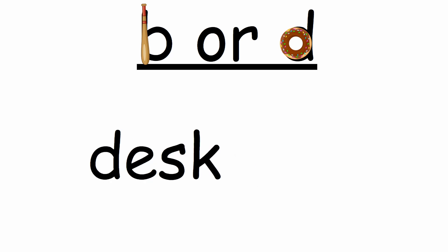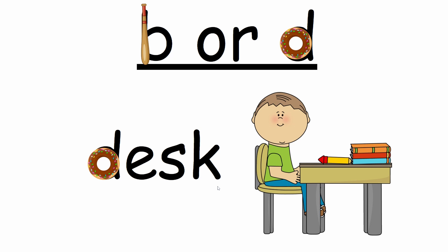What letter does this word start with? Let's look at this first letter — it looks like it starts with a donut. It starts with a donut, so that means it's a letter d. The letter d makes the d sound, like in donut. D. So let's go ahead and read our word: d, esk. D, esk. Let's blend it: desk. Desk. Very good.